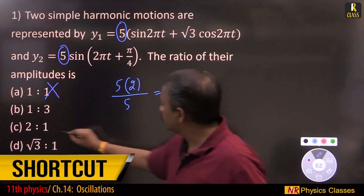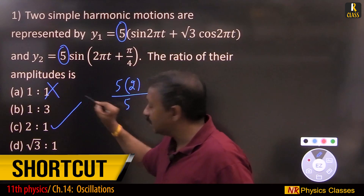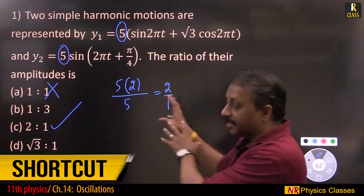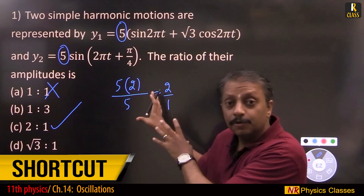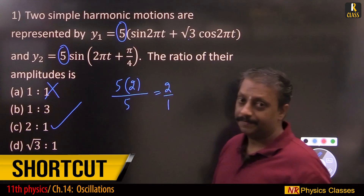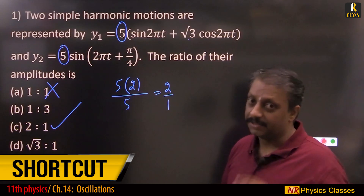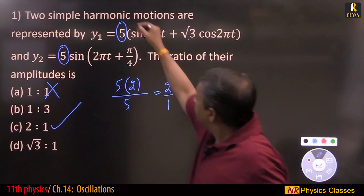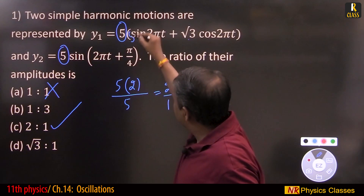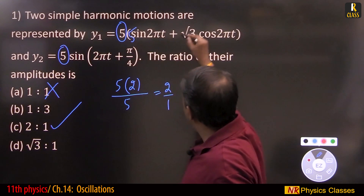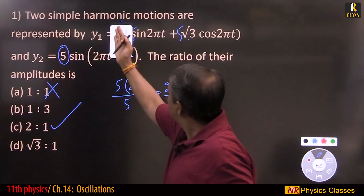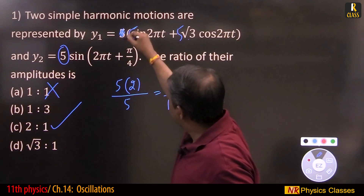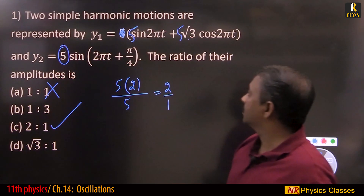...so it is 2 to 1. The answer is 2 to 1. How to use this method, and what is the reason behind it? Conceptually, take 5 inside: it is 5 sine and 5 root 3 sine. There is no extra 5 here — done.